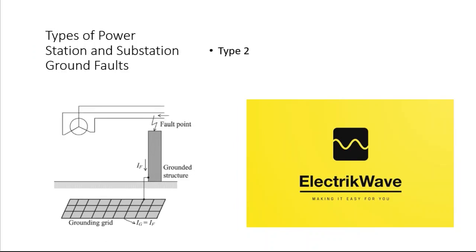Let's see Type 2 fault. Fault within local substation, the neutral is only grounded remotely, and all the fault current flows from the fault point through the substation grounding grid into the earth.